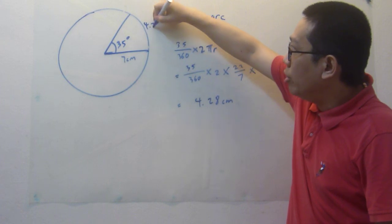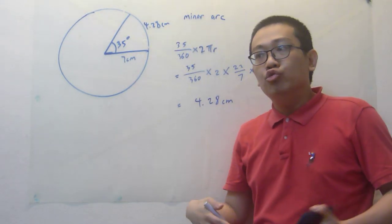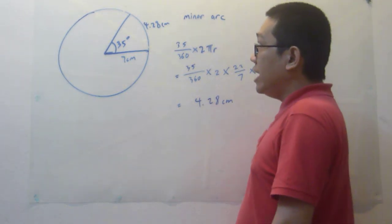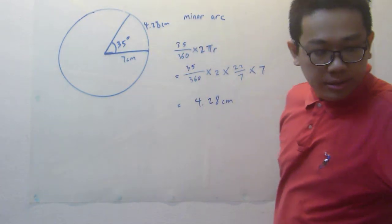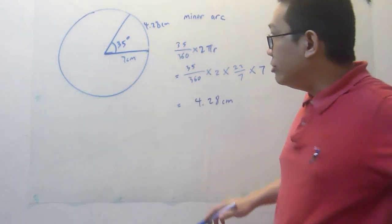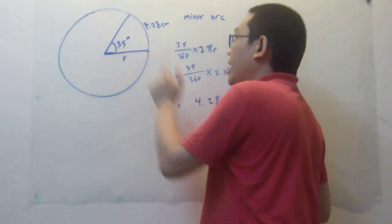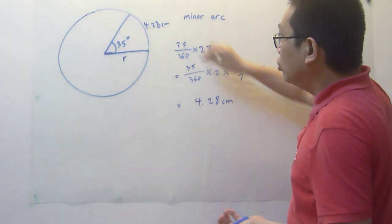So this is 4.28 cm. Now let's try to reverse the question. If the question says that the minor arc is 4.28 and the radius is the one that we need to find and this one remains 35 degrees, how are we going to do this?